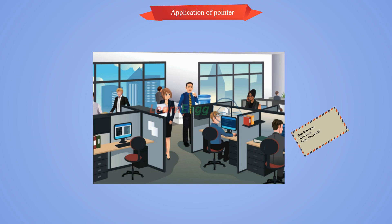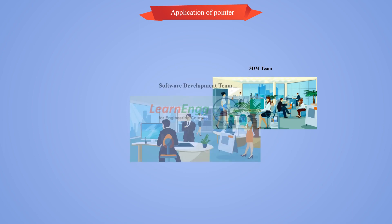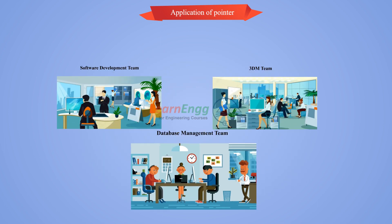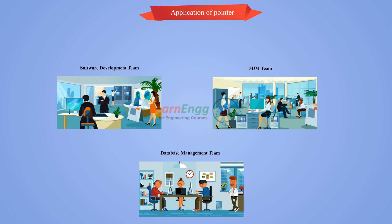If you want to find a specific employee ID 40025 inside a building, you can find the entire building including all the departments like 3DM team, software development team, database management team etc., and then find the particular employee who is inside the building.